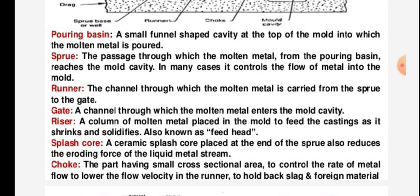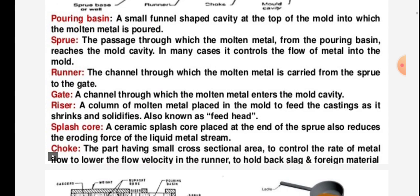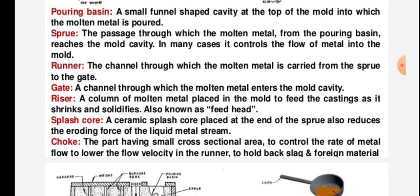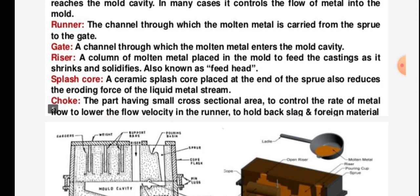The runner is the channel through which the molten metal is carried from the sprue to the gate. The gate is a channel through which the molten metal enters the mold cavity. The riser is a column of molten metal placed in the mold to feed the casting as it shrinks and solidifies, also known as a feed head.